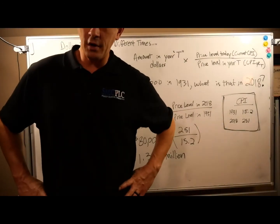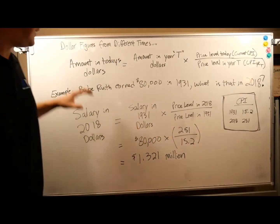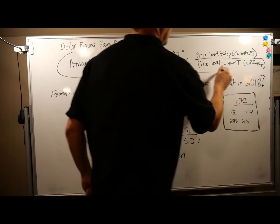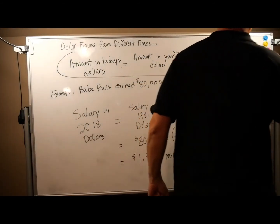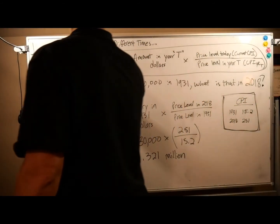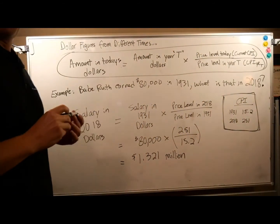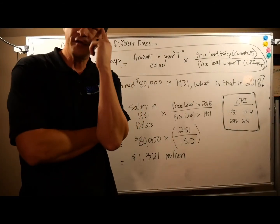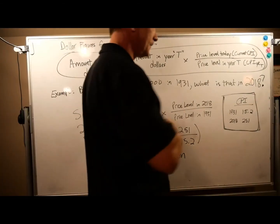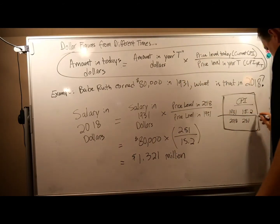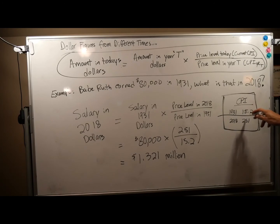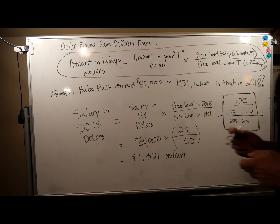On your homework, you're going to do this exact same calculation using this equation — some of you for golfers, some for baseball players, most of you for golfers — for winnings. Just keep in mind: the base year is somewhere in between. Below 100 is before the base year; above 100 is after the base year.